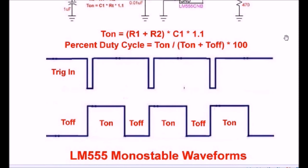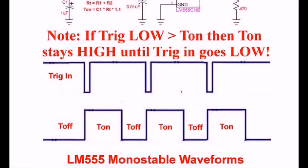This slide shows the relationship between the trigger input and the output. When I press the switch, the input to the trigger goes low. The output on pin 3 immediately goes high, and it stays on based on the formula (R1 plus R2) times C1 times 1.1. One thing to note: if I press the switch and hold it in, the output will stay high for as long as I hold it. If I hold the switch longer than the T-on time, it will still stay high until I release it. But if it has already timed out and I release it, it will immediately go low.